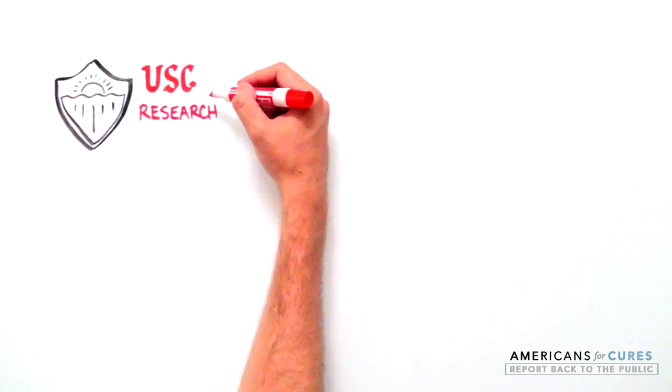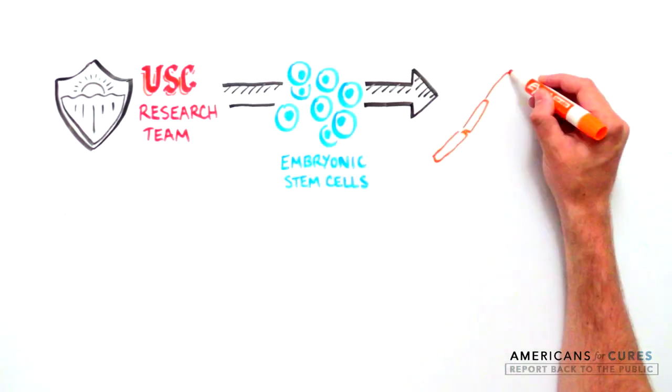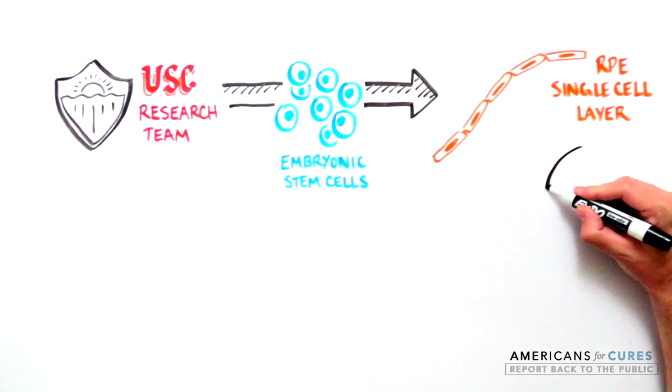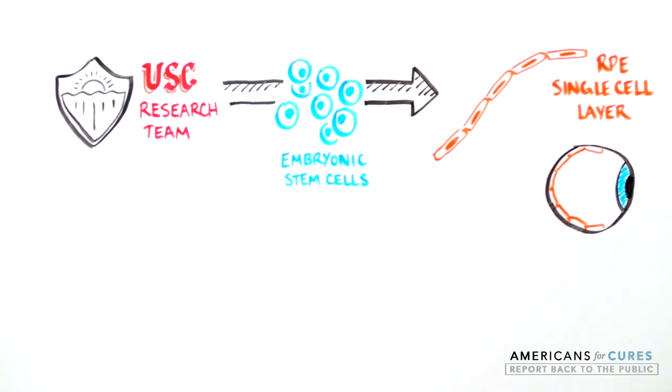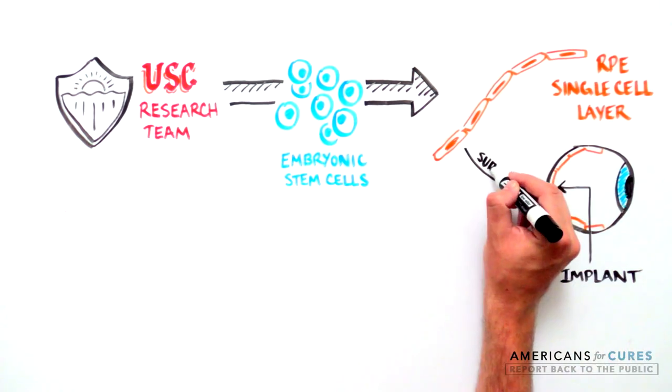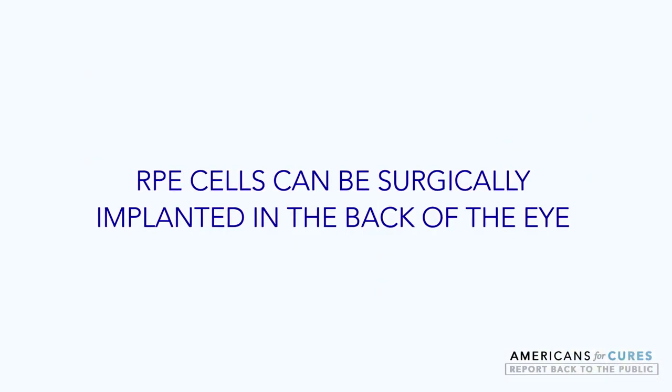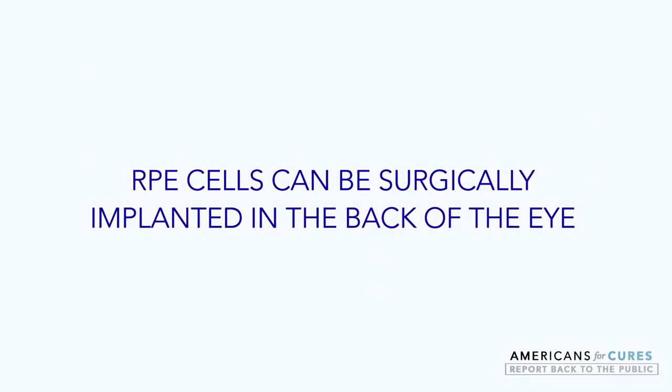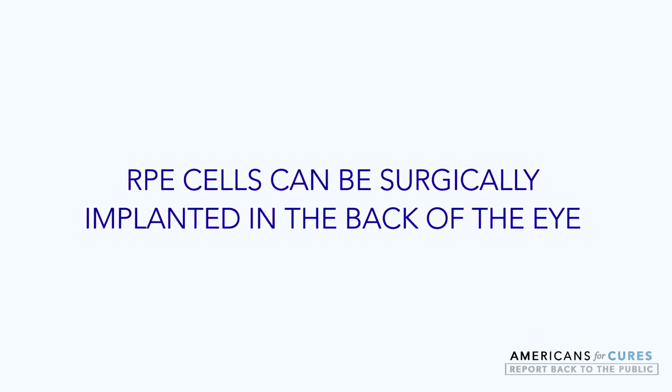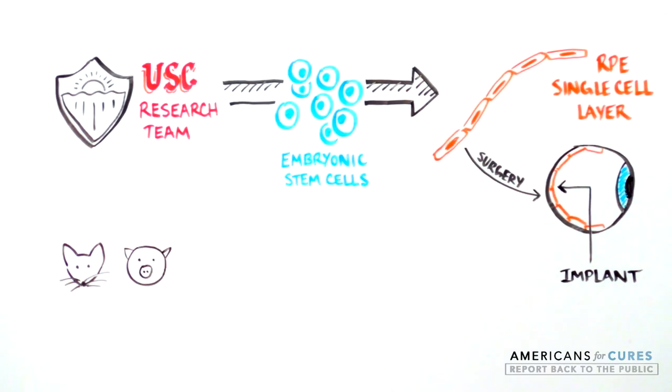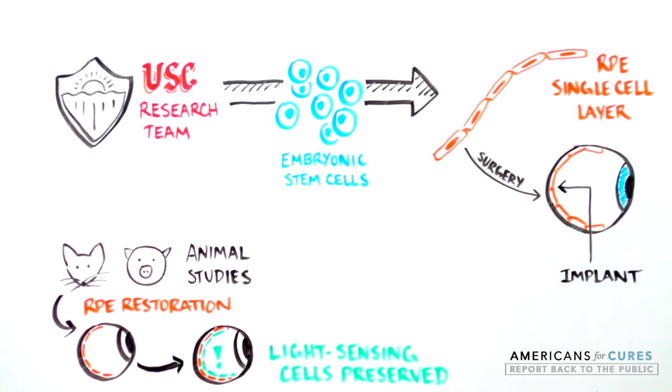The researchers are using embryonic stem cells to generate RPE cells. These RPE cells can be grown as a very thin sheet, only a single cell in depth, and then surgically implanted into the back of the eye on a micro-scaffold, where they can functionally replace damaged RPE cells. In animal studies, once the RPE cells are restored, the remaining light-sensing cells they support are preserved, and visual function improves.